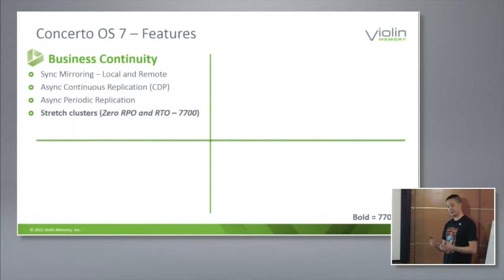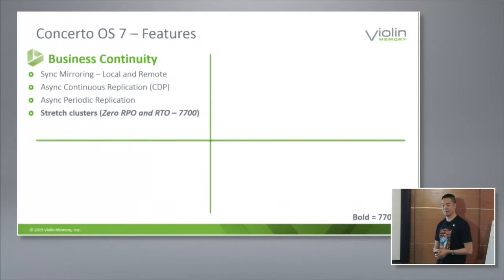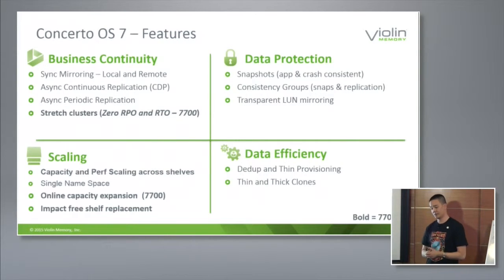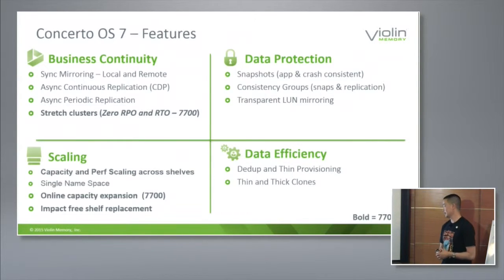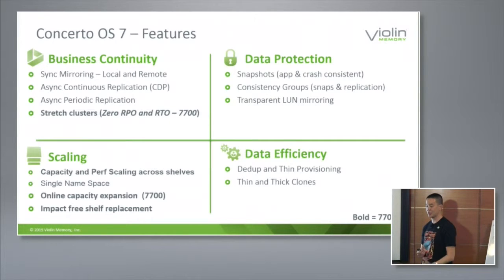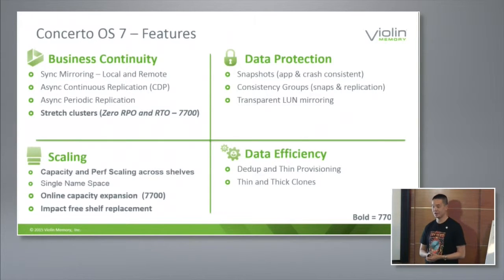One of the biggest significant changes we've made as a company is to deliver a significant and rich feature stack of data protection and data management capabilities. From a data protection standpoint, in our own native IP we possess space-efficient snapshots with delta changes only, the ability to generate writable space-efficient clones from our snapshots, thin provisioning, and all the data protection that has to go with it — including the ability to do consistency groups and application-integrated snapshots. With an Oracle agent, you can take a database-consistent snapshot across a consistency group, combine that with replication policy for a very powerful and comprehensive state of data management.